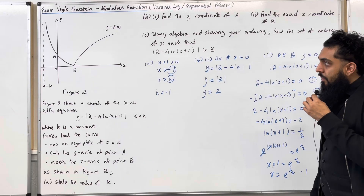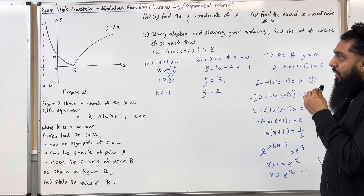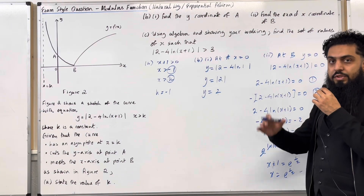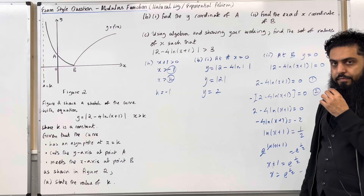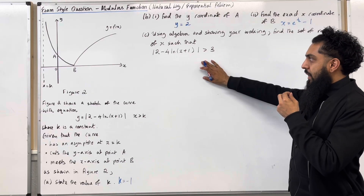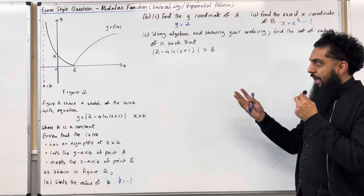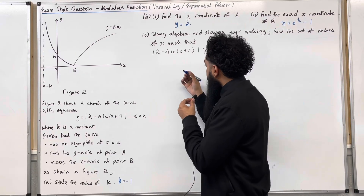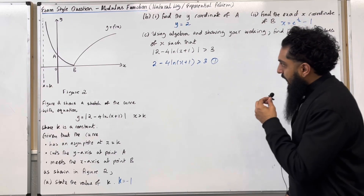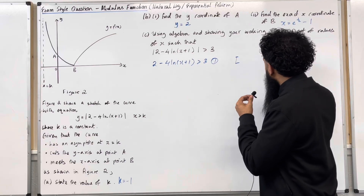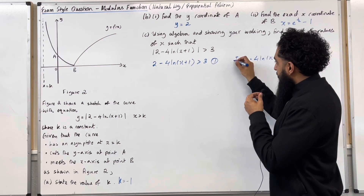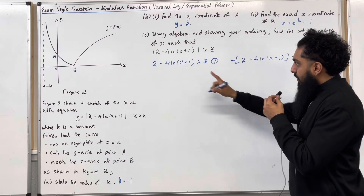Let's have a look at part C. Using algebra and showing your working, find the set of values of x such that the modulus of 2 minus 4 ln(x plus 1) is more than 3. In part C we have a modulus inequality. We need to set up two inequalities: the first removes the modulus and sets it greater than 3; the second puts a negative at the front of the expression and sets it more than 3. Then we solve them individually.